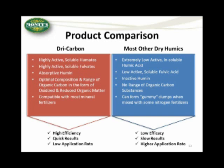We have an optimal composition and range of organic carbon in the form of oxidized and reduced organic matter — processing that range inside the brown coal. Finally, most other dry humics, when mixed with different types of nitrogen fertilizers, turn into a gummy mess — clumps of material that are very difficult to spread. Our material is compatible with most mineral fertilizers, so we don't have that issue. What you end up with using dry carbon is high efficiency, quick results, and low application rates — versus low efficiency, much slower results, and higher application rates with competitors.